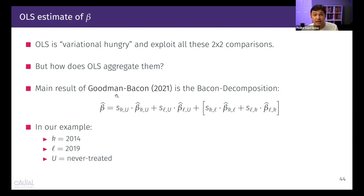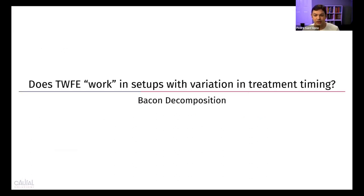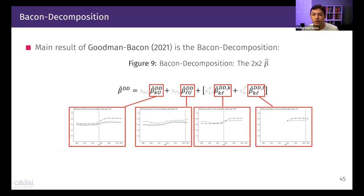The main result of the Goodman-Bacon paper is causal-inference-agnostic: it tells us that two-way fixed effects is exploiting all four types of DiD, using different time windows, and attaching weights to each. Each of these betas is weighted, and understanding those weights is key.